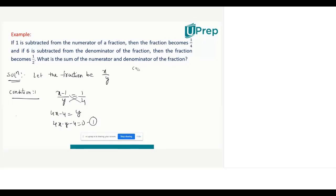Second condition: if 6 is subtracted from the denominator of the fraction, then the fraction becomes one by two. So x divided by (y - 6) equals 1/2.